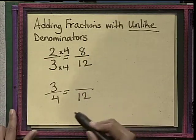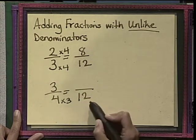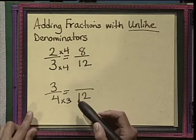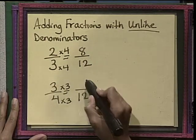Let's go ahead and look at the bottom fraction. 4 times 3 gives us 12. Well, we are now going to multiply the numerator by 3 as well. 3 times 3 equals 9.